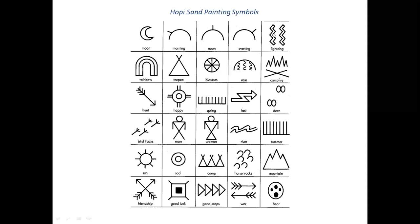Symbol of lightning — makes sense. Obviously rainbow. Teepee — wigwam as we call it — house. Blossom, interesting — it's got eight parts to that wheel. The rain coming down from the heavens. Campfires — different to the Aboriginals, but there it is. The flames, the campfire. Hunt — obviously arrow. Happy has got the centre of the soul, but reaching outwards again — so there's happiness. Spring — a lovely way to represent it: everything's starting to burst upwards, grass is growing.